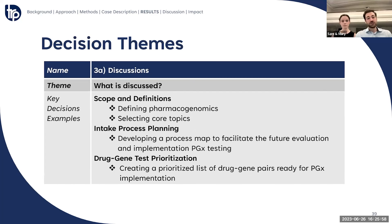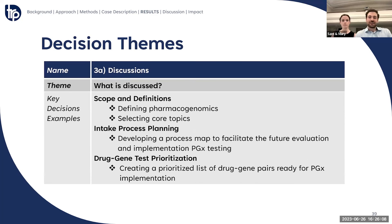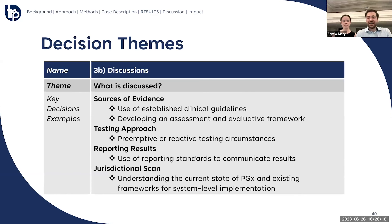Looking at decisions about how the group was managed, we found the mode of delivery, which was fully virtual, was a key choice from the organizers, as was deciding to add smaller meetings to support the large group sessions, along with administrative decisions on how to reach consensus and perform voting exercises. The next theme was mostly related to pharmacogenomics-related content, like the decisions about definitions and the scope of the group. Another notable decision was deciding to develop a process map to facilitate future evaluation and implementation of PGX testing, and also to create a list of priority drug-gene pairs, which was facilitated by a voting exercise.